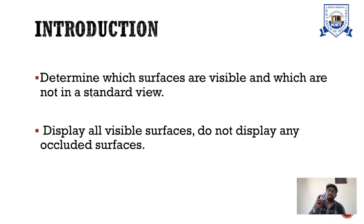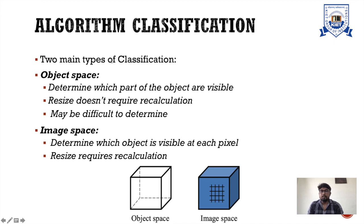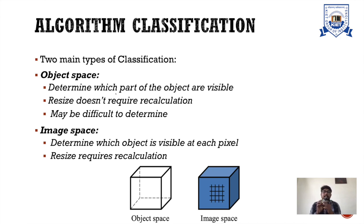These are the hidden surfaces hiding behind the front surface. That is the algorithm classification — two main types: first is object space. What do you mean by object space? Determine which part of the objects is visible. When we are going to project on the screen, resizing of this object is not required, or it may sometimes be difficult to determine because the projection size — we are going to project on a screen.